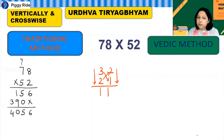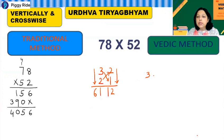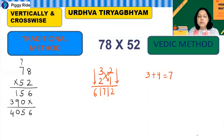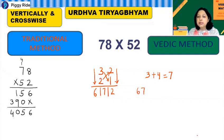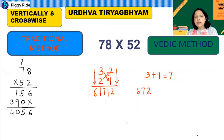Starting from the right: multiply 2 times 1 to get 2. Then multiply the first digits: 3 times 2 is 6. For the cross in the middle, multiply 3 times 1 to get 3 and 2 times 2 to get 4, then add those products: 3 plus 4 is 7. So 7 goes in the middle, giving the answer 672. With the Vertically and Crosswise method we got the answer very quickly.